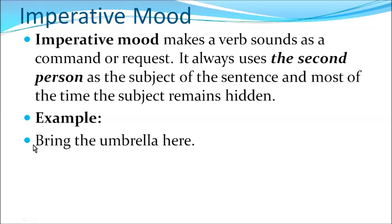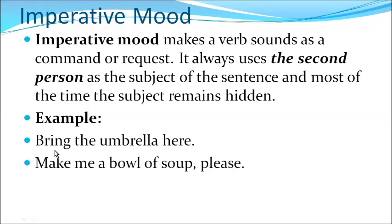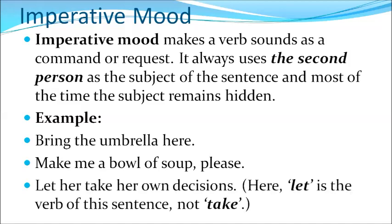For example: 'Bring the umbrella here' — it begins with a verb and there is no subject because the subject 'you' is understood. 'Make me a bowl of soup, please' — this is a request; the subject 'you' is understood. 'Let her take her own decision' — here 'let' is the verb, and again no subject is stated while the second person is understood.